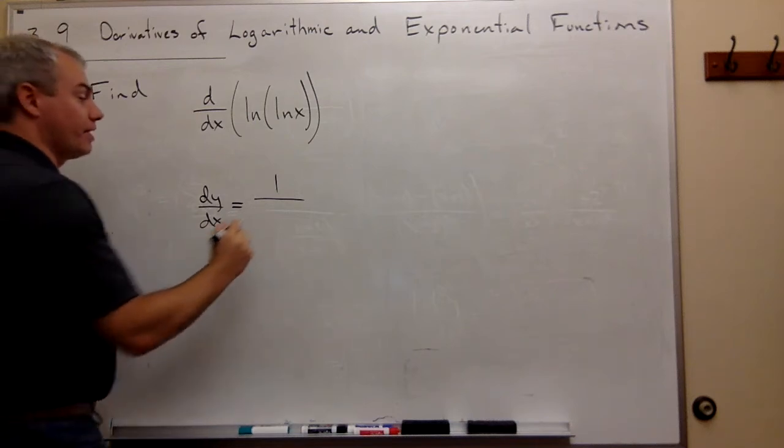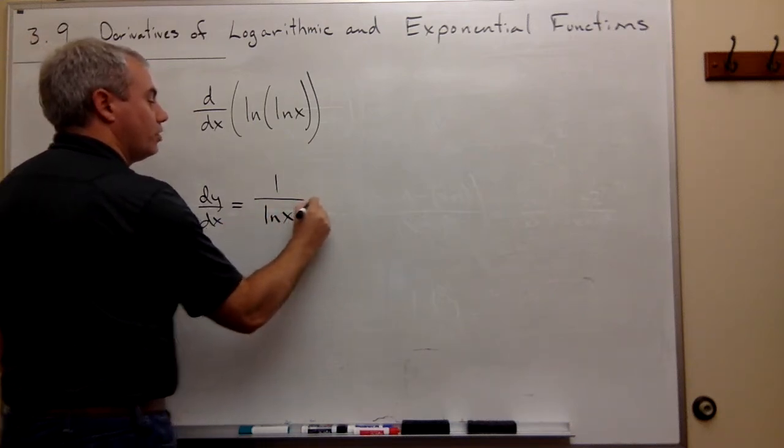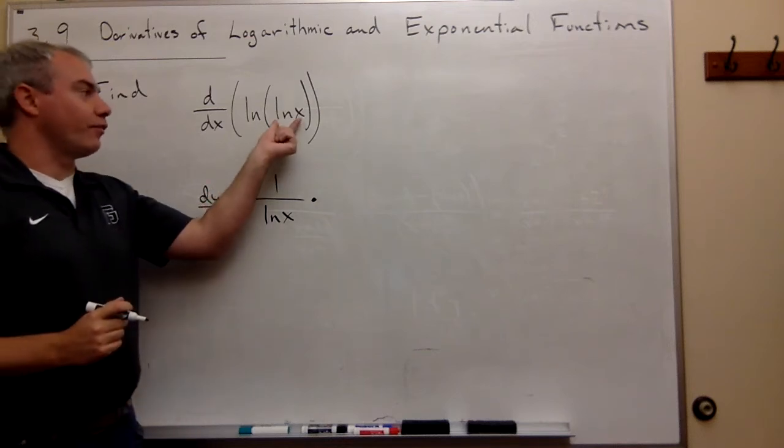So I'm going to start by saying it's 1 over ln of x. But then I need to multiply by the derivative of what's on the inside.